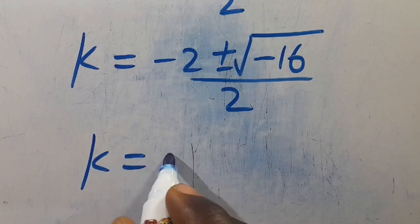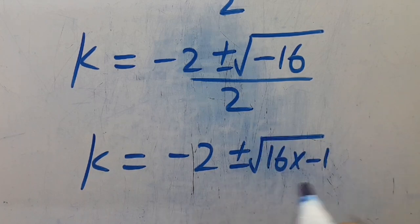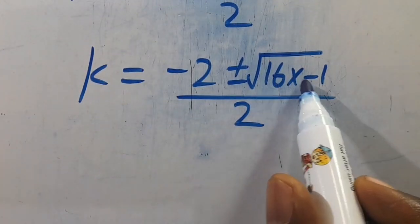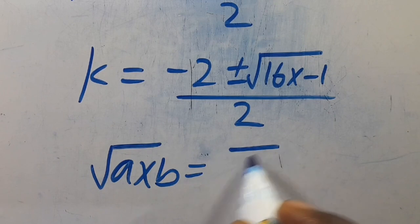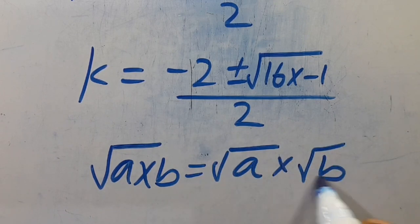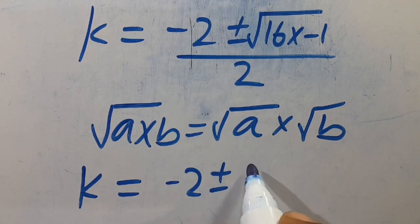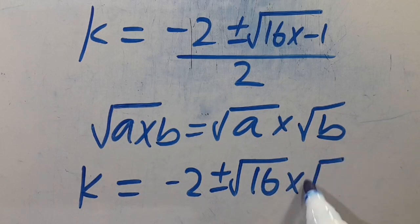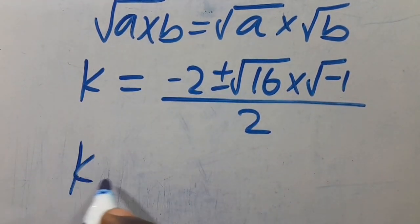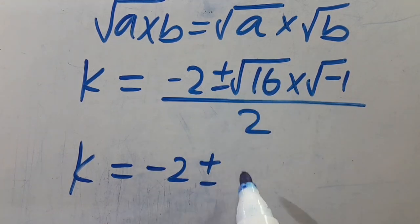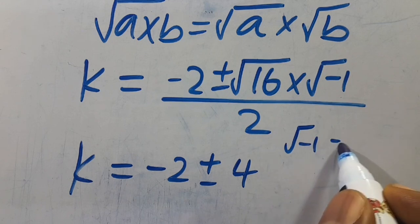We have k equals minus 2, positive or negative, root of 16 times minus 1, divided by 2. Remember when you have root of a times b, it equals root of a multiplied by root of b. So from here, k equals minus 2, positive or negative, root of 16 times root of minus 1, divided by 2. Root of 16 gives us 4, and root of minus 1 equals i, so we have 4i.